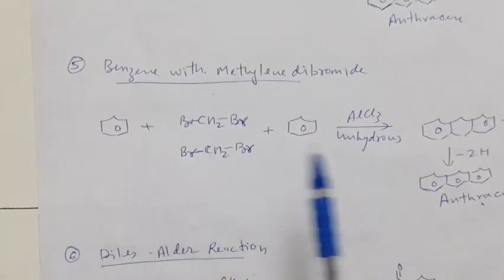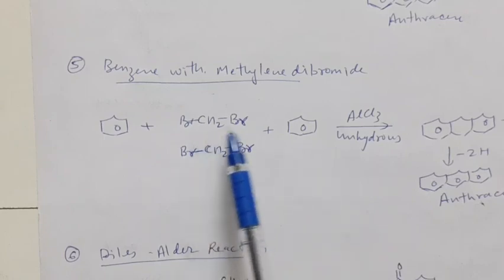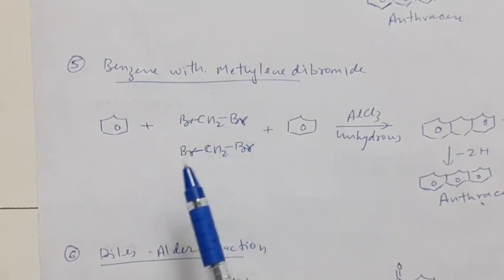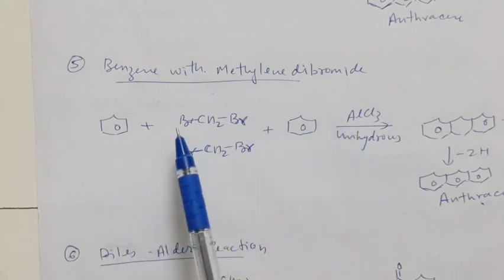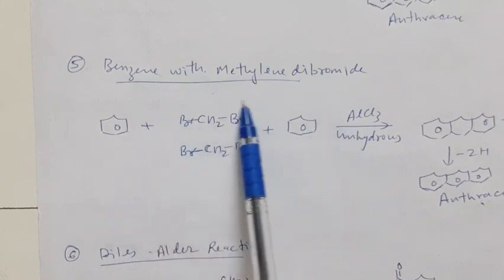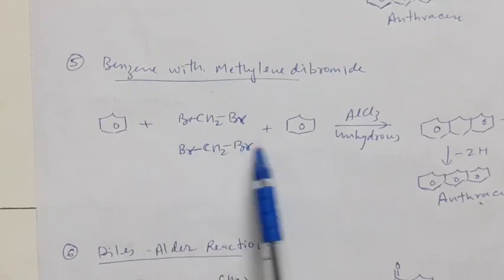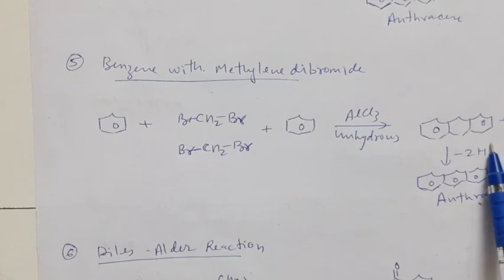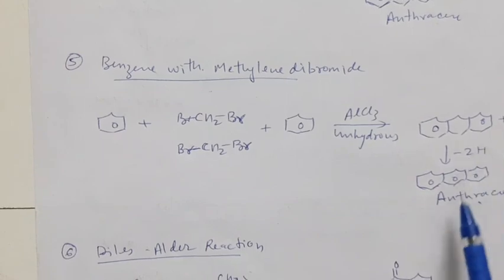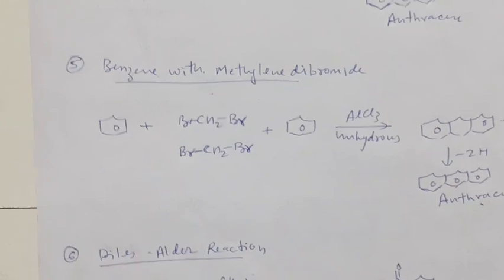In the next reaction, 2 molecules of benzene react with 2 molecules of dibromomethane in the presence of anhydrous aluminum chloride. Four molecules of HBr are eliminated and we get dihydroanthracene again, which on dehydrogenation gives anthracene.